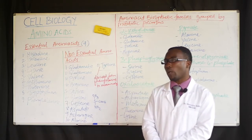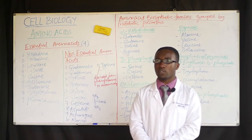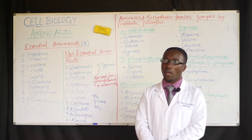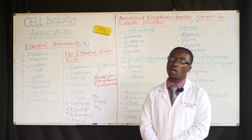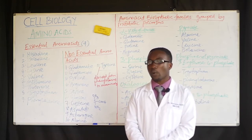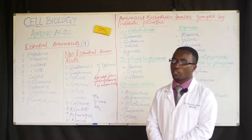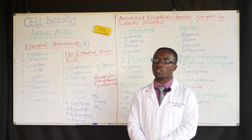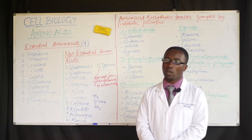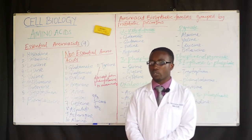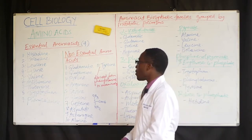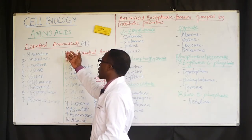In category two, we have non-essential amino acids. These are easily synthesized by our bodies and include glutamate, glutamine, proline, arginine, serine, glycine, cysteine, aspartate, asparagine, alanine, and tyrosine. Tyrosine can also be derived from another amino acid called phenylalanine in mammals, and we human beings are part of the mammals.